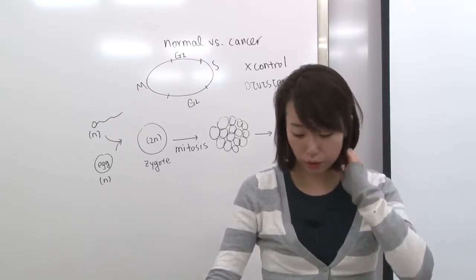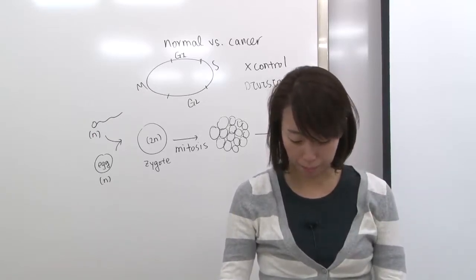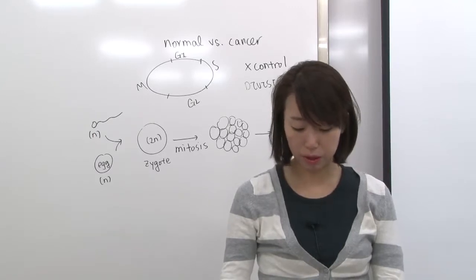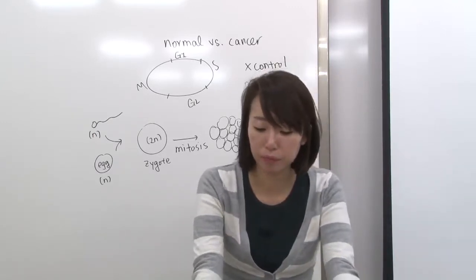Number seven, which of the following does not occur by mitosis? The answer is B, right? Production of gametes is meiosis.